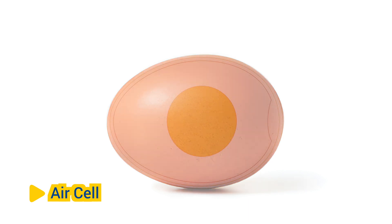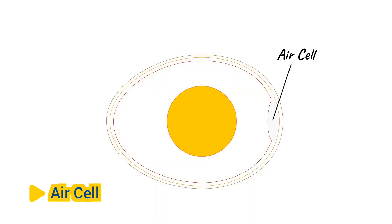Air cell. As the egg ages, an air cell forms at the blunt end of the egg between the inner and outer shell membranes. The size of the air cell increases over time as moisture evaporates from the egg, creating a space for the embryo to breathe during incubation.